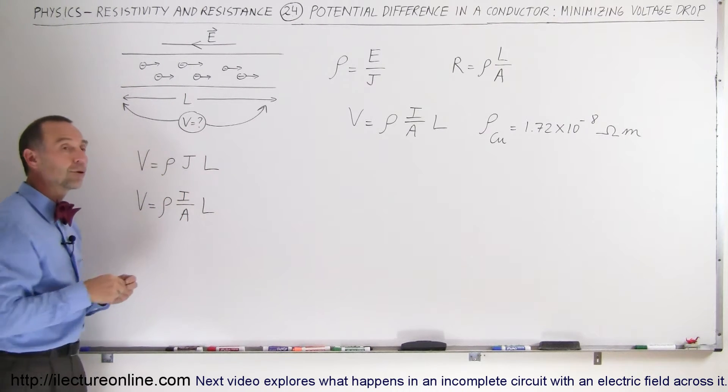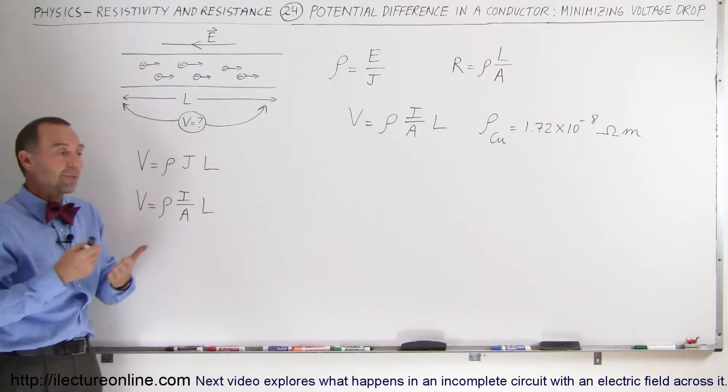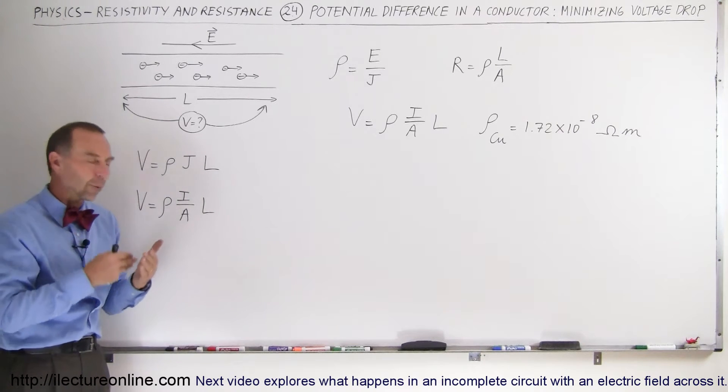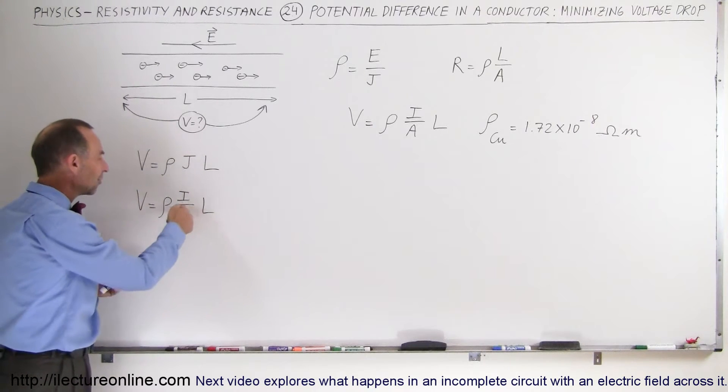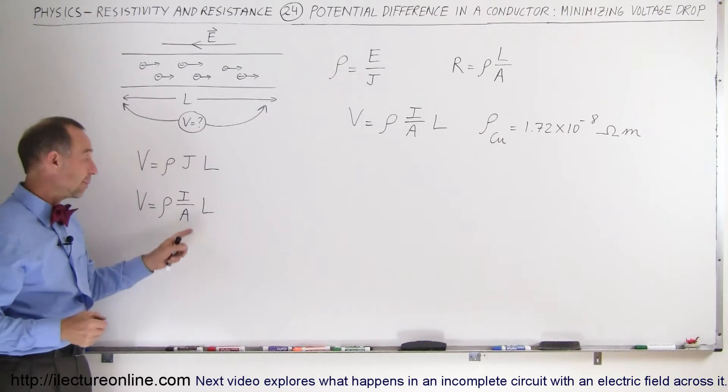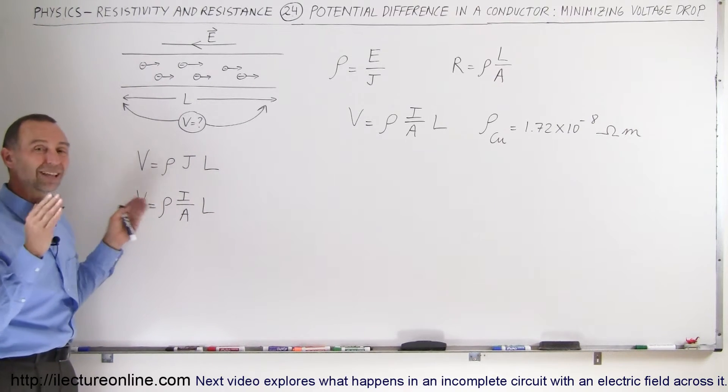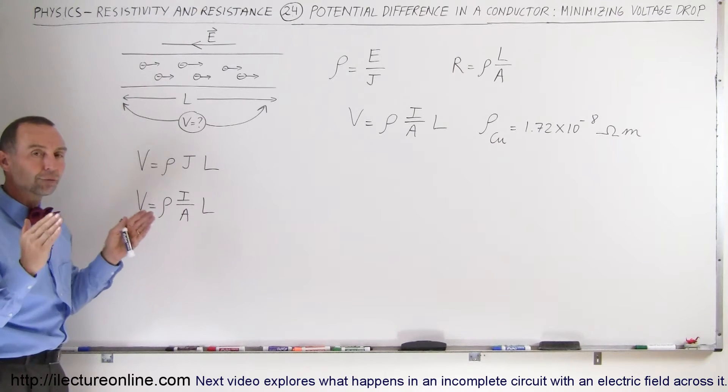Notice the only component here in the denominator is the cross-sectional area. We may not be able to do anything about the current requirement. We may require a certain amount of current to go through the wire. So the only control that we have is the cross-sectional area of the wire. If we make that bigger, we have a smaller potential difference across the wire, a smaller voltage drop.